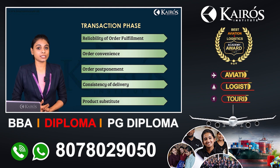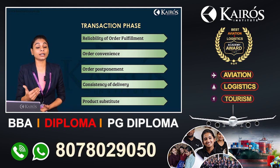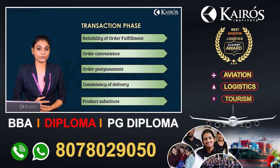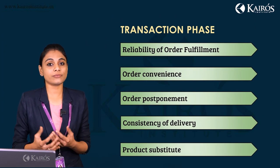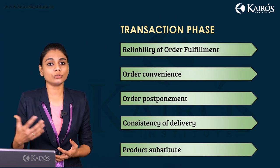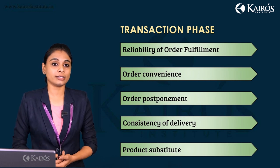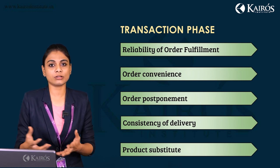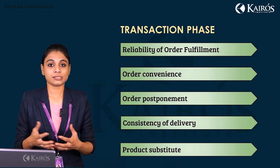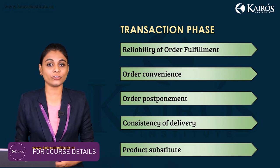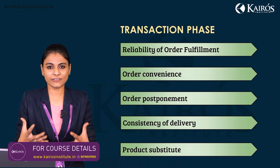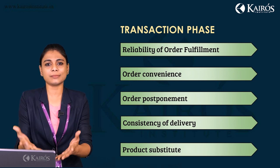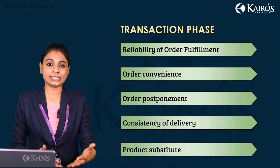The second element is order convenience — how easy it is for the customer to place an order. If ordering online, it is very convenient. Most people use smartphones or laptops to place orders on e-commerce sites like Amazon or Flipkart, where a smartphone app is all that is needed. That ease and readiness for the customer is called convenience.